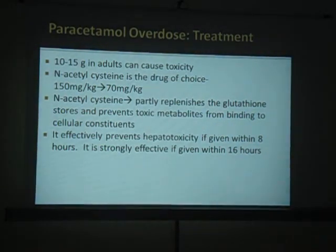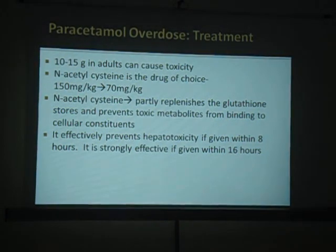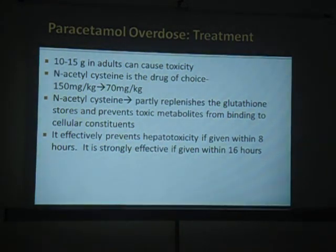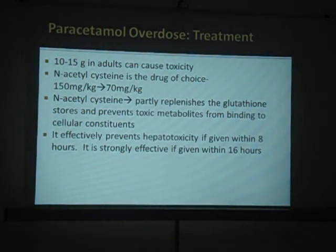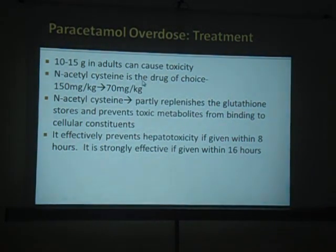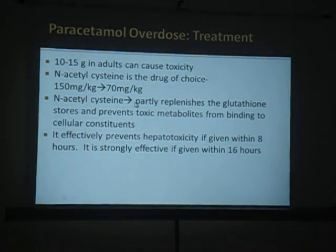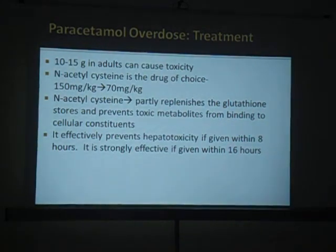Paracetamol overdosage of 10 to 15 grams is poisonous in adults - approximately 30 tablets. The drug of choice is N-acetylcysteine. N-acetylcysteine partially replenishes the glutathione stores. Glutathione is an enzyme present in the liver which helps in detoxifying paracetamol. N-acetylcysteine helps in replenishing the glutathione stores and prevents toxic metabolites from binding to cellular constituents, effectively preventing hepatotoxicity. It should be given as early as possible - within 8 hours.